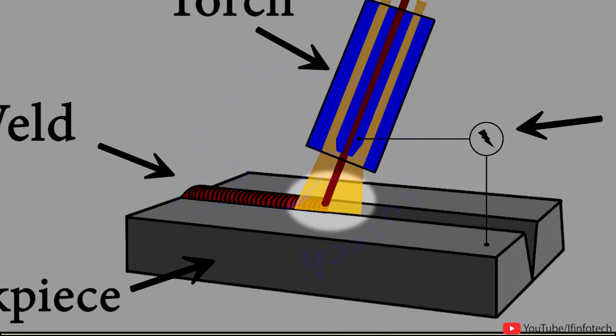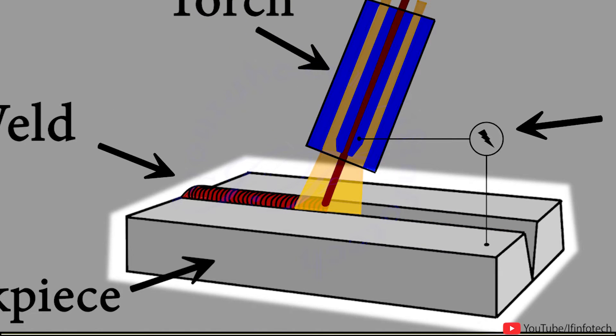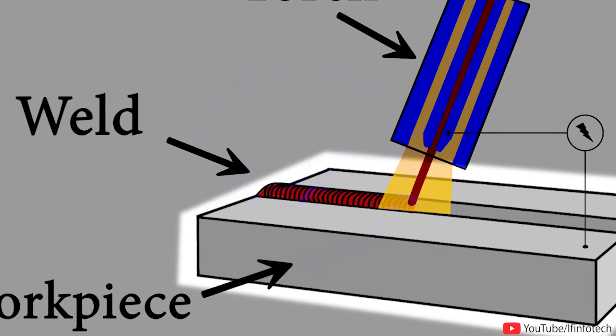The arc is struck between the end of the wire electrode and workpiece, melting both of them to form a weld pool.